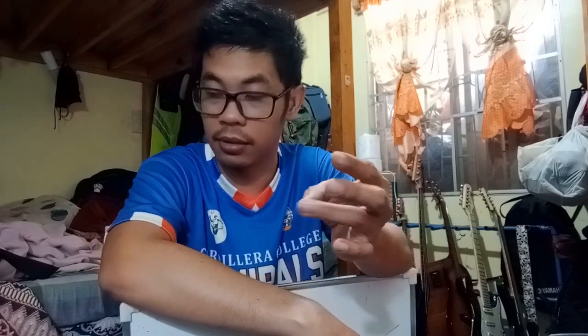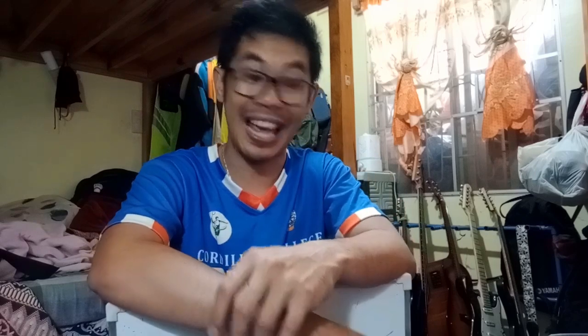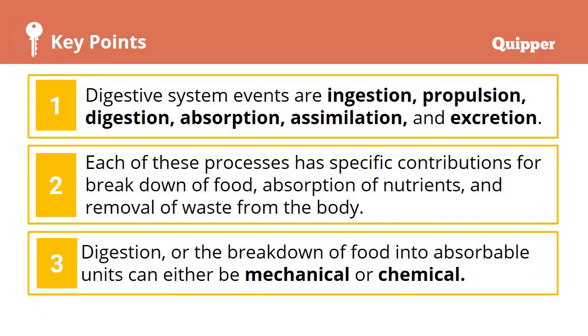As I mentioned last time, the undigested material stays temporarily in the rectum until it fills up. It then triggers the sensory stimuli in the muscles of the anus, signaling that it's full and ready to come out. Your key points here: the digestive system events are ingestion, propulsion, digestion, absorption, assimilation, and excretion.